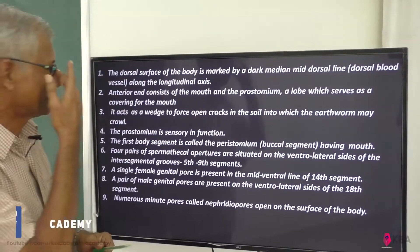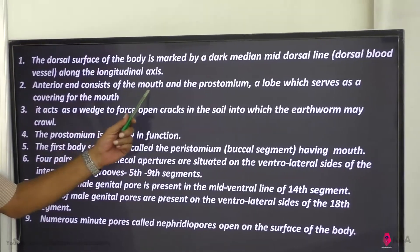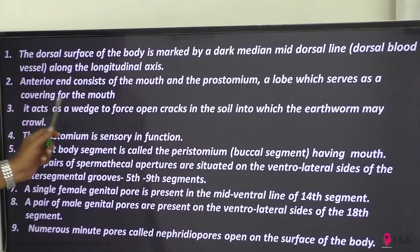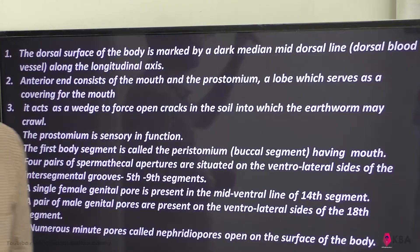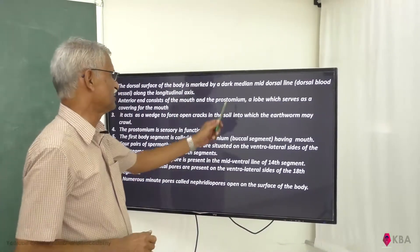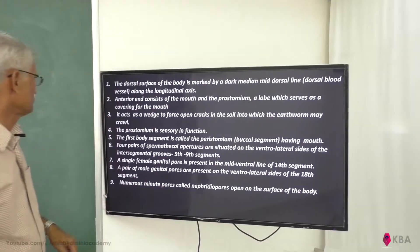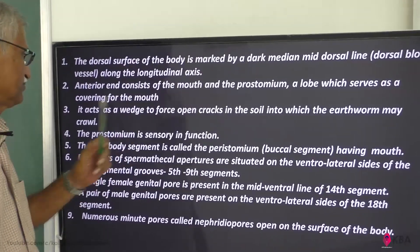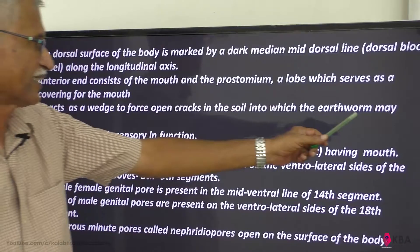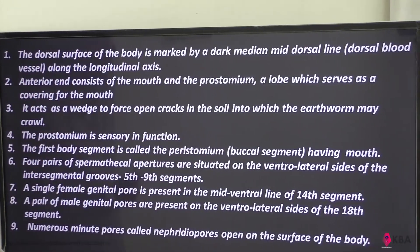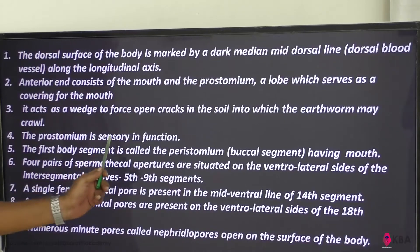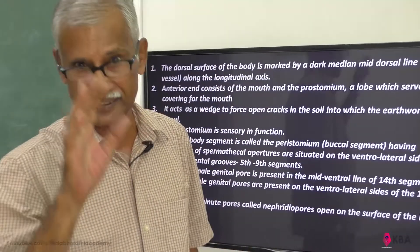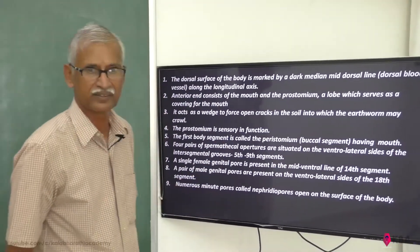The anterior end consists of the mouth and prostomium — a lobe which serves as a covering for the mouth. That is the prostomium. It acts as a wedge to force open the cracks in the soil, into which the earthworm may enter. The prostomium has a sensory function.